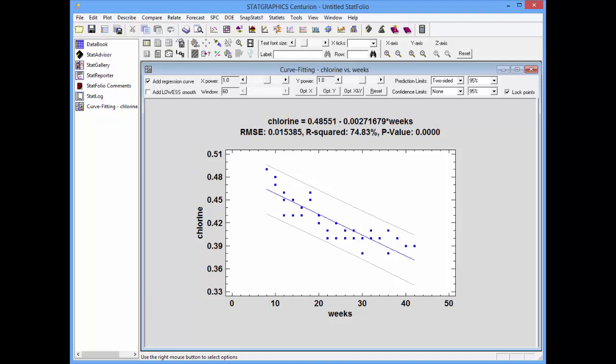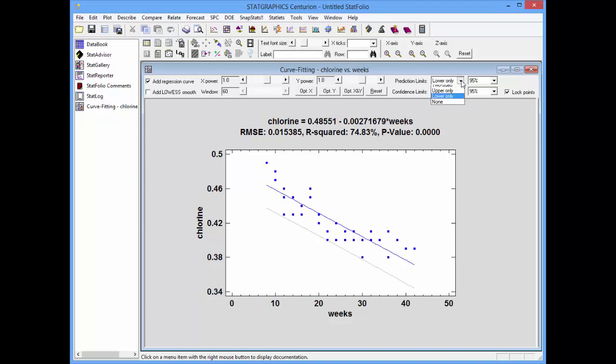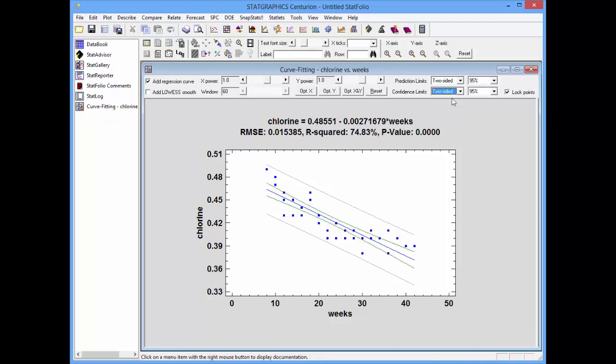There are several options on the control bar. One option is what type of prediction limits I'd like to plot. Right now they're two-sided limits. I could plot upper limits only or lower limits only if I preferred. I can also change the percentage from 95% to 90 or 99. I can also add confidence limits. Those are limits for the mean response at a particular value of x.